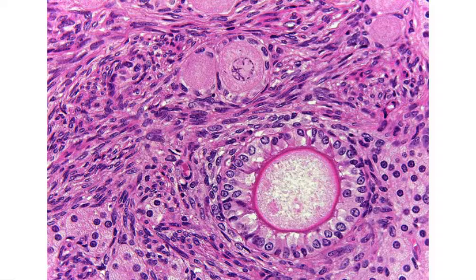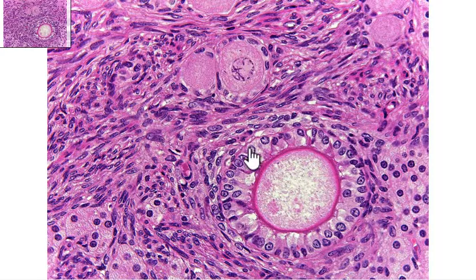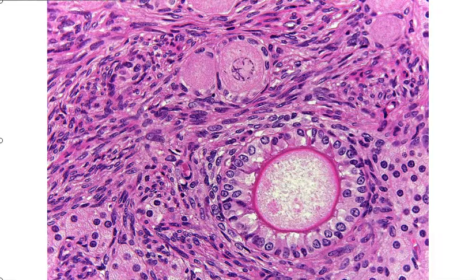This slide is from the ovary. The current magnification is 400x total magnification. Now what we're looking for are going to be primary follicles. We don't need to zoom in this time because you can see it right here — this is going to be the primary follicle.